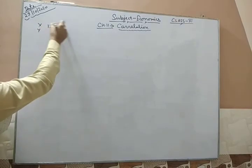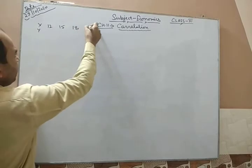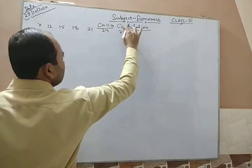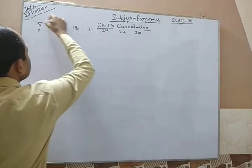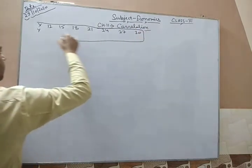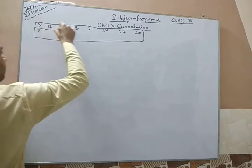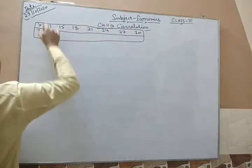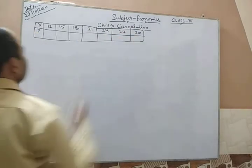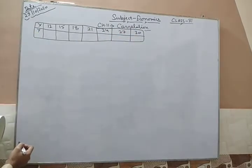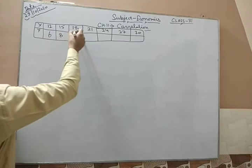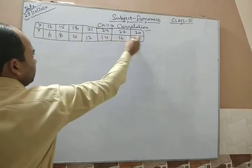The data has been given. X series values are: 12, 15, 18, 21, 24, 27, and 30. Y series values are: 6, 8, 10, 12, 14, 16, and 18. This is the question. There are two series — X series and Y series — and by the help of these we have to calculate the coefficient of correlation by the shortcut method.